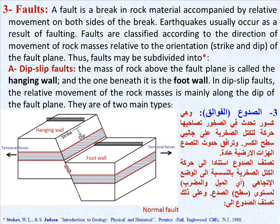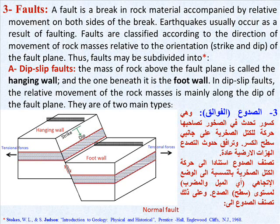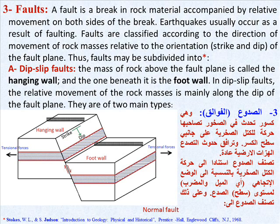3. Faults — a fault is a break in rock material accompanied by relative movement on both sides of the break. Earthquakes usually occur as a result of faulting. Faults are classified according to the direction of movement of rock masses relative to the orientation (strike and dip) of the fault plane. Faults may be subdivided into: A, dip-slip faults.